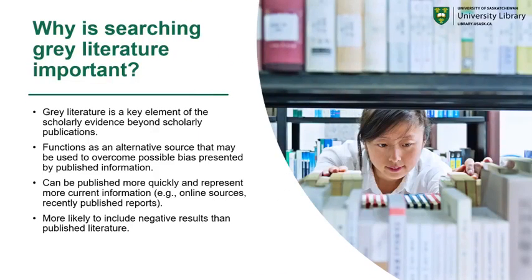So why is searching gray literature important? Gray literature is a key element of the scholarly evidence beyond scholarly publications. It provides supplemental information that can help you provide evidence and bolster your findings. Gray literature functions as an alternative source that may be used to overcome possible bias presented by published information. It can be published more quickly and represent more current information — think of preprints being published as soon as research is completed before going through the peer review process. Gray literature is also more likely to include negative results than the published literature.